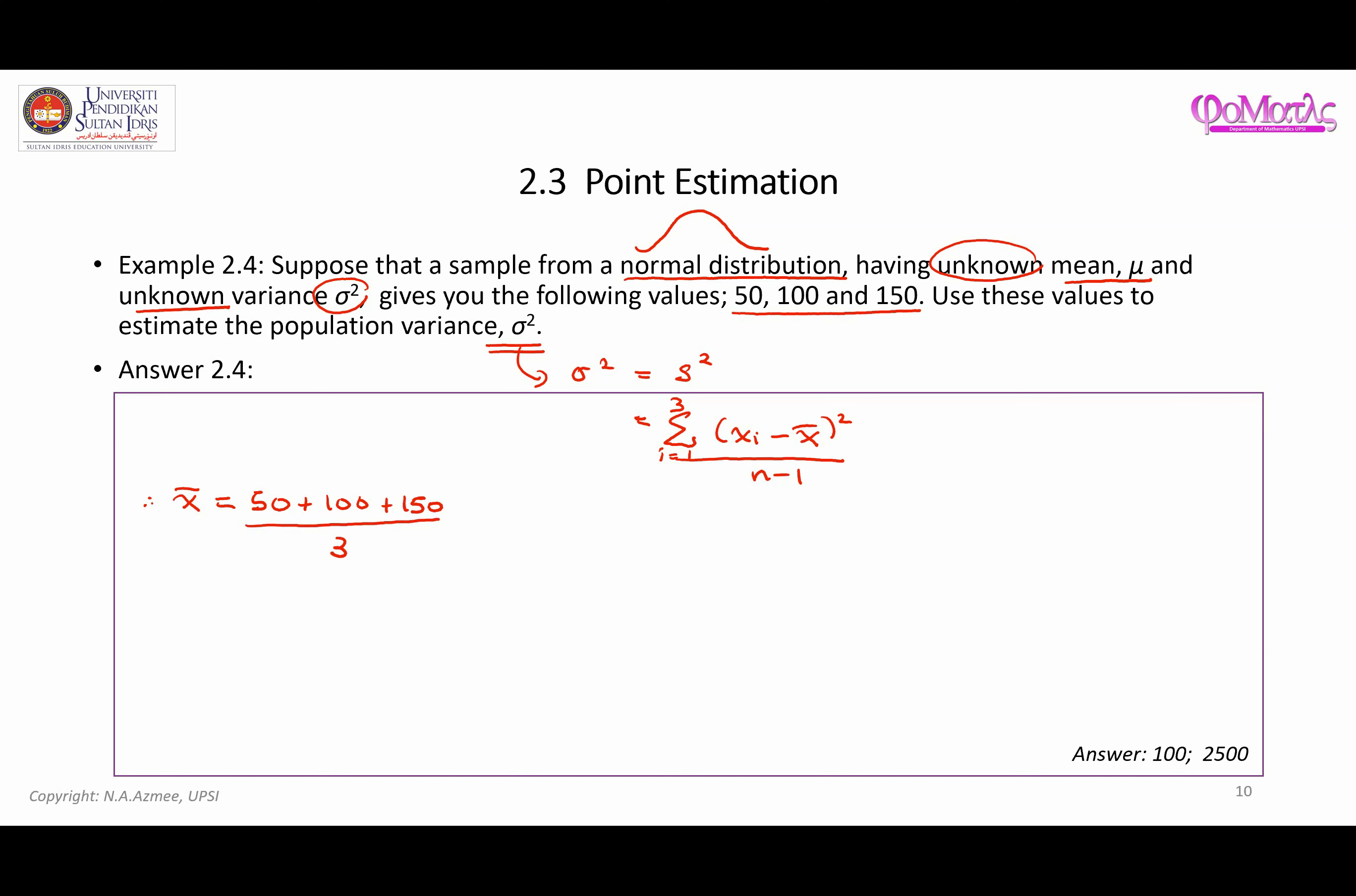So this is 150, 150, 300 over 3. So x bar is going to be equal to 100, which is given by this one.